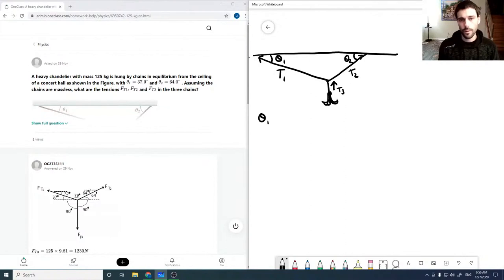And we've got theta1 and theta2. Theta1 is given as 37.0 degrees. Theta2 is given as 64.0 degrees.